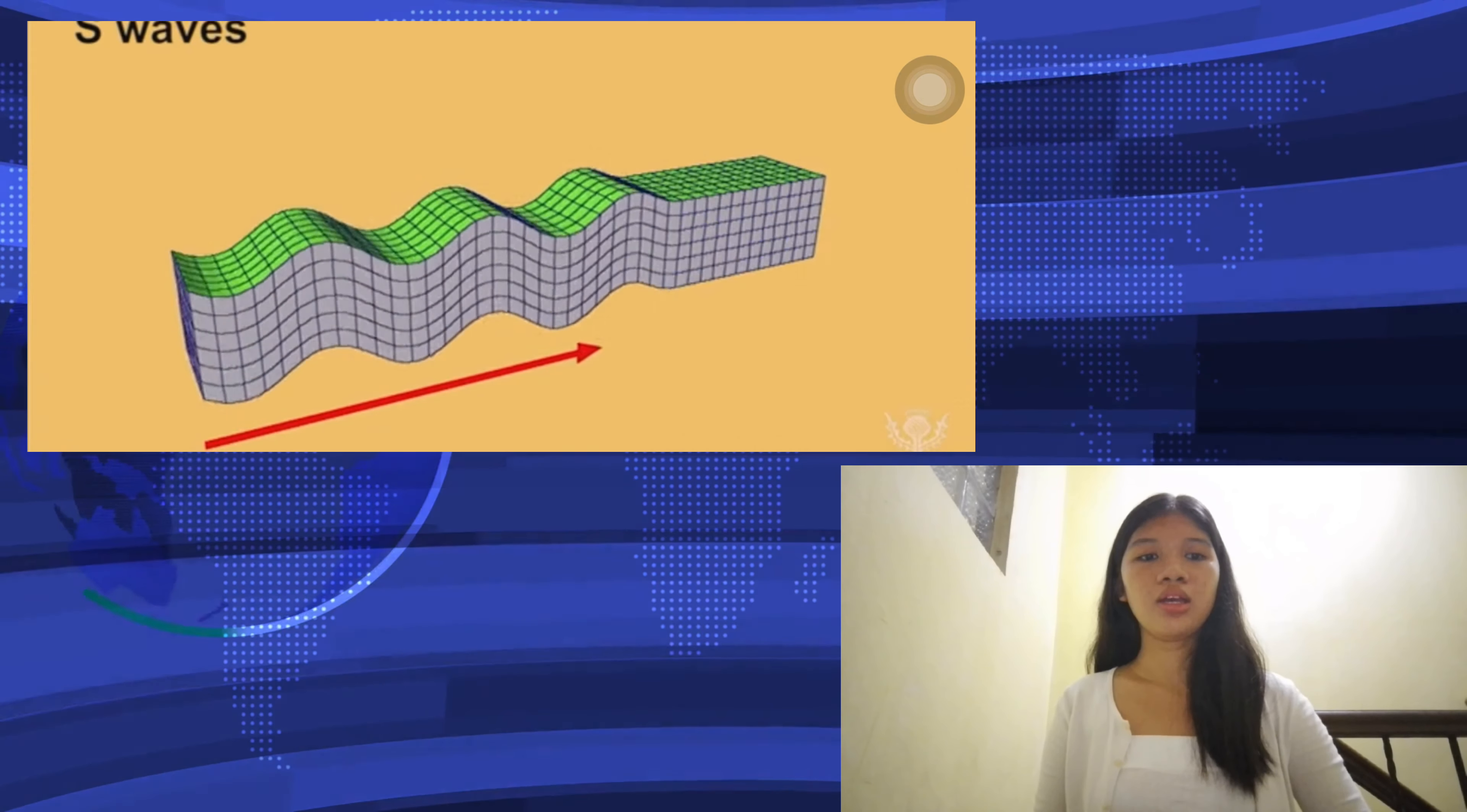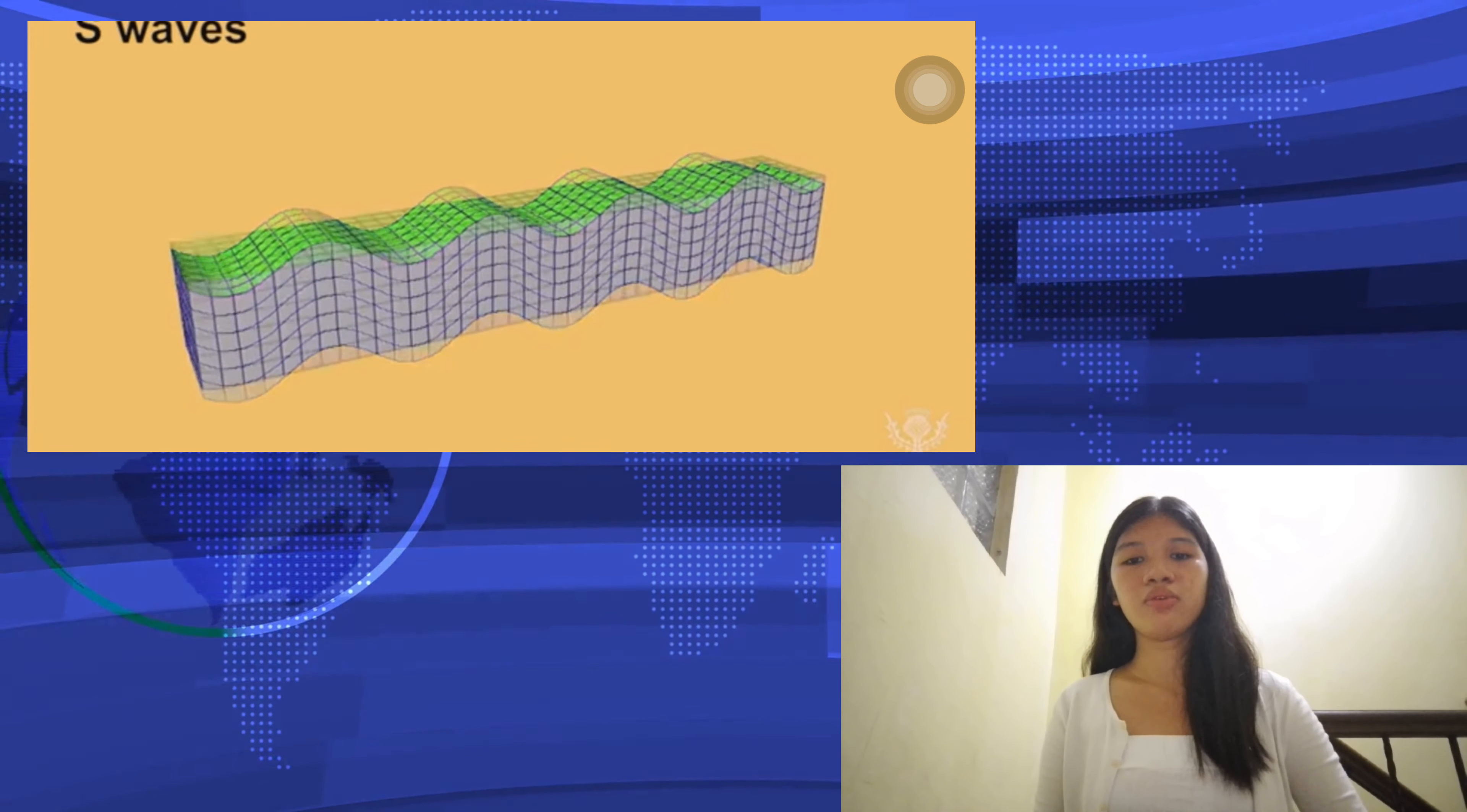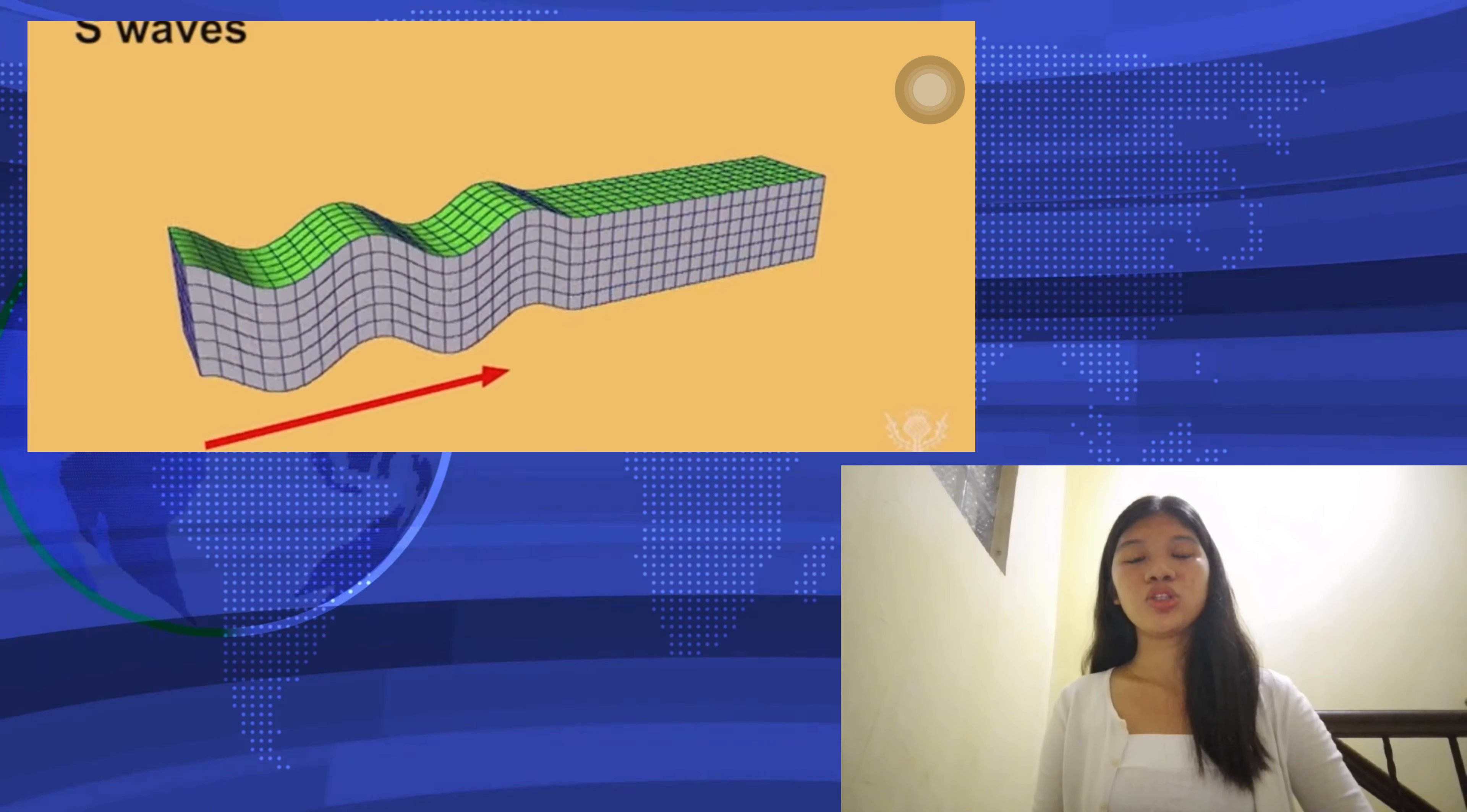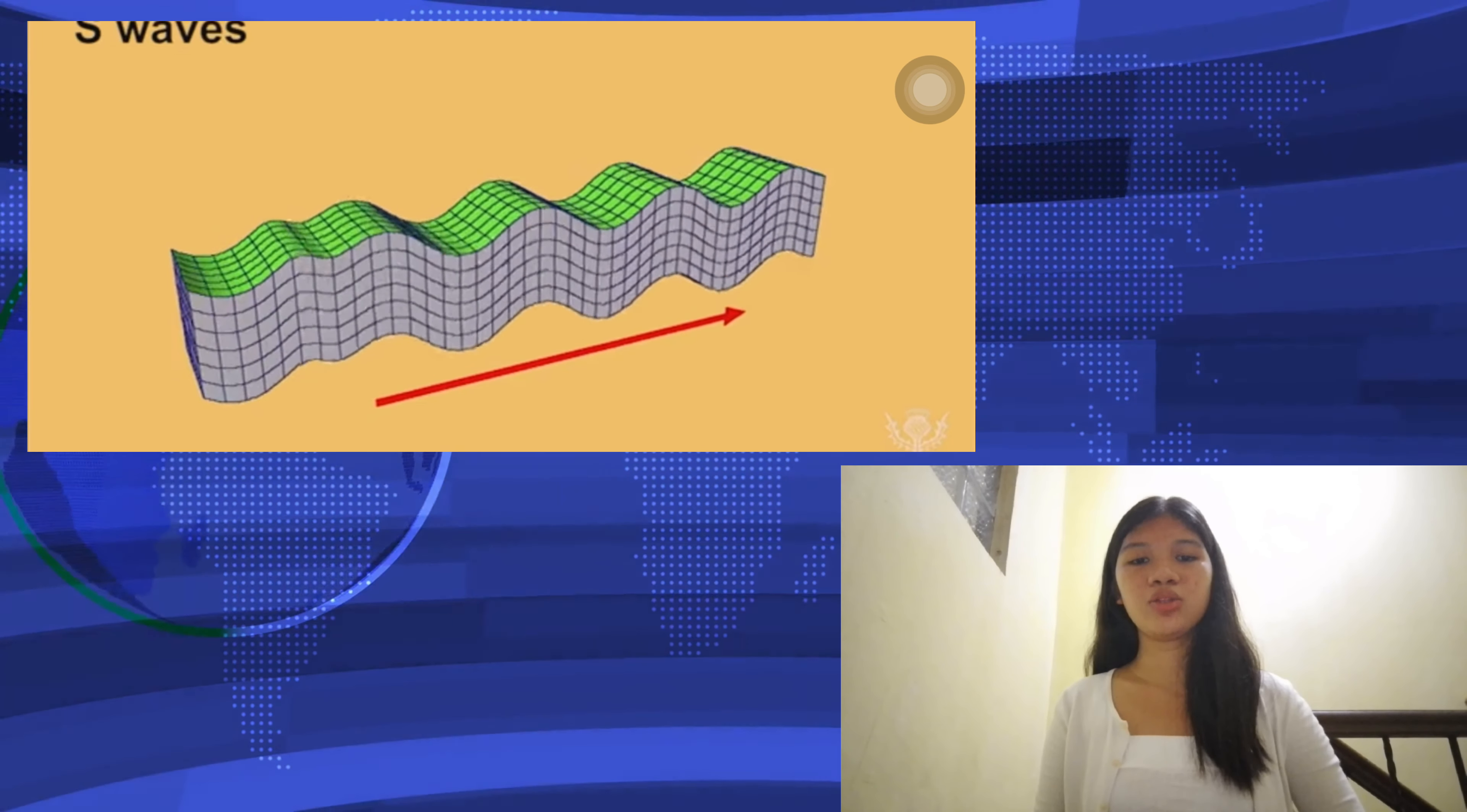S-waves are secondary waves that follow P-waves. They move more slowly and only travel through solid material, causing side-to-side motion that can be quite destructive.